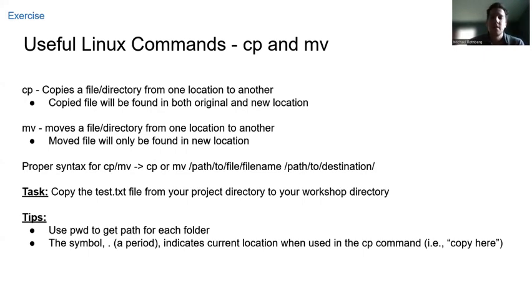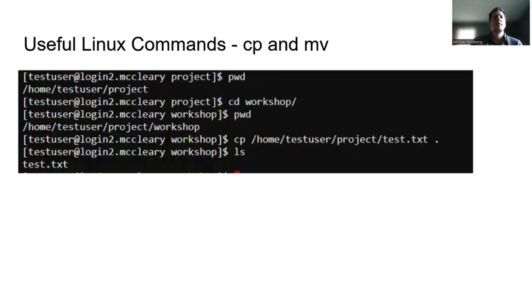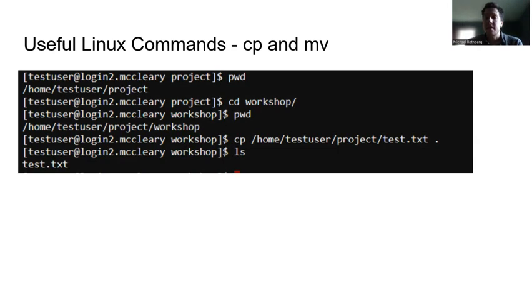A fun tip: the period symbol indicates your current location, so using `.` in a copy command means 'copy to where I currently am.' From within my project directory, I typed `pwd` to get the path of the project location. I then `cd` to my workshop folder and used `pwd` again to get that path. I then typed `cp`, copied the path of my project location and added the file name `test.txt` to the end, then used the period since I was already in the workshop directory. I hit Enter and the file completed. I typed `ls` and could see test.txt was now available in my workshop directory.